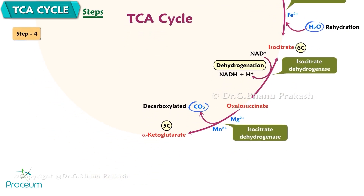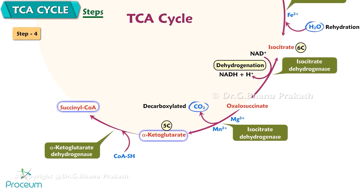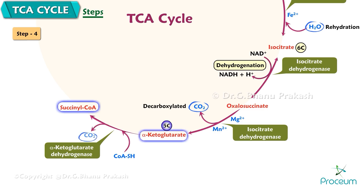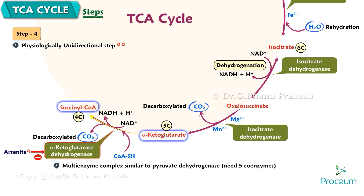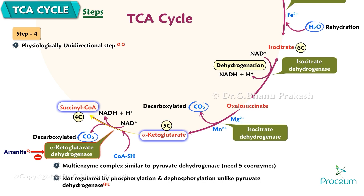Step 4: Conversion of alpha-ketoglutarate to succinyl coenzyme A. Alpha-ketoglutarate (5C) is oxidatively decarboxylated to succinyl coenzyme A (4C). It is the second oxidative decarboxylation and one NADH is formed. Physiologically, it is a unidirectional step. Alpha-ketoglutarate dehydrogenase is inhibited by arsenite. It is a multi-enzyme complex similar to pyruvate dehydrogenase, requiring 5 coenzymes, but unlike pyruvate dehydrogenase, it is not regulated by phosphorylation and dephosphorylation.